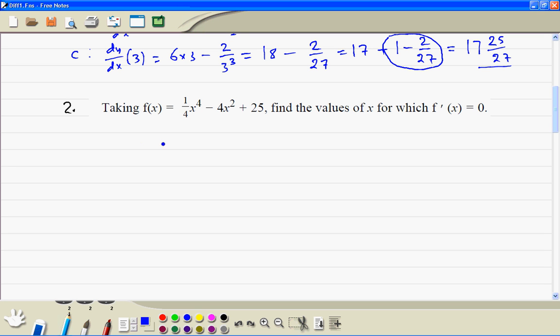Question 2. So we differentiate. 4 times 1 quarter is 1, so that's x cubed minus 8x. And the derivative is equal to 0, so we put that equal to 0.